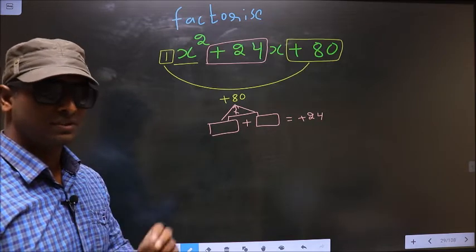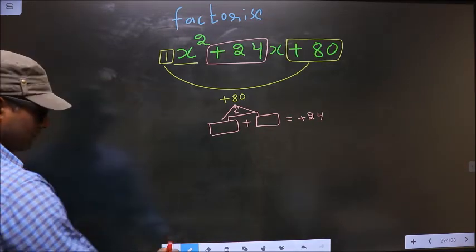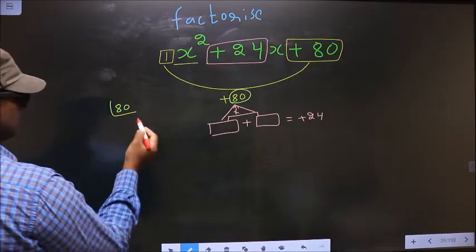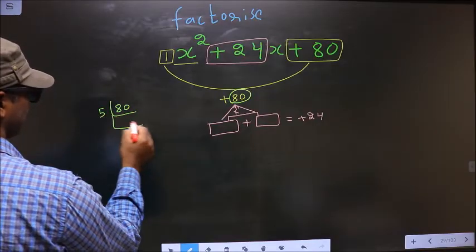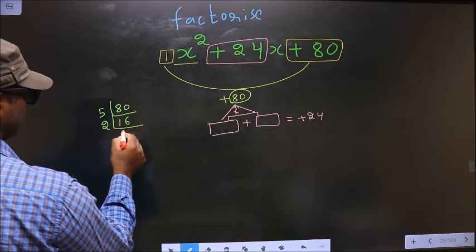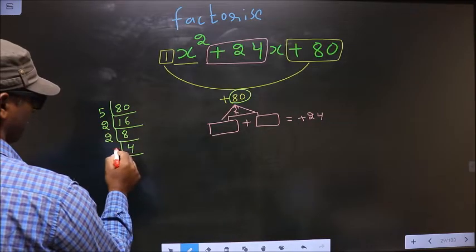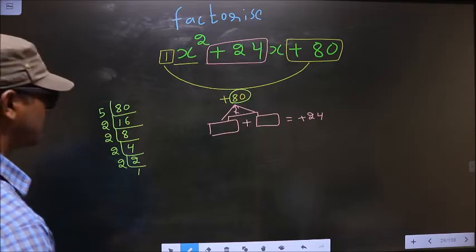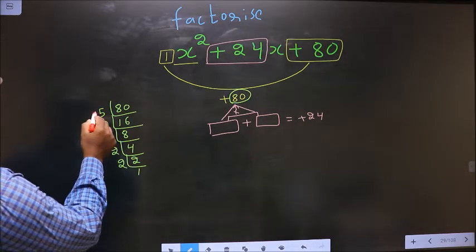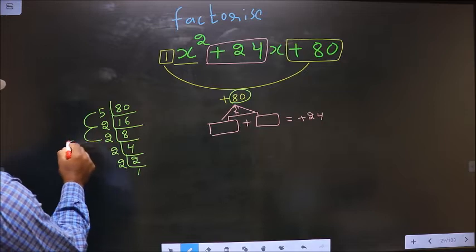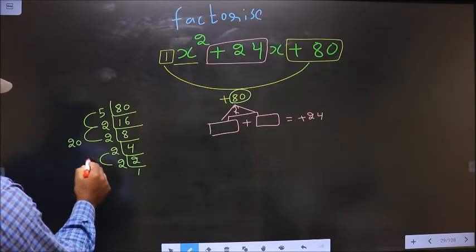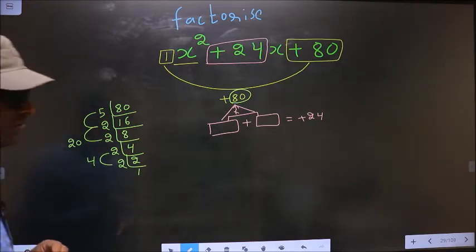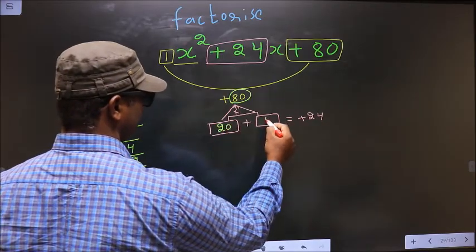To get those 2 numbers we should take LCM of 80. So I start with 5. 5, 1, 5, 6, 30. Now 2, 8, 2, 4s, 2, 2, 2, and 1. The 2 numbers should be 5 into 2, 10, 10 into 2, 20, and the second number is 2 into 2, 4. 20 into 4 is 80, 20 plus 4 is 24. So here I write 20 and here I write 4.